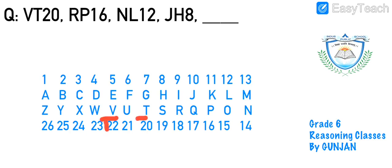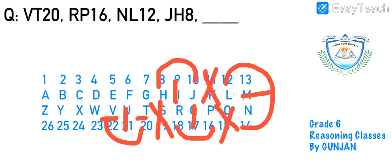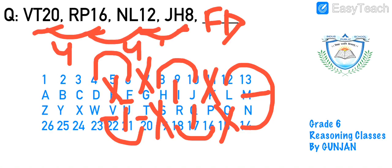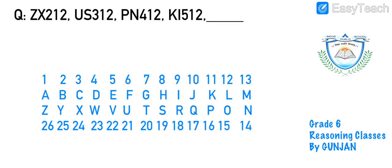Next series: vp20, rp16, nl12, jh8. Between the pairs of alphabets, one letter is skipped, and one letter is also skipped while moving from one pair to the next. Skipping one alphabet from j gives f; the next after h skipping one gives d. Numbers: 20, 16, 12, 8 — difference of 4 each time, so 8 minus 4 is 4. The answer is fd4.